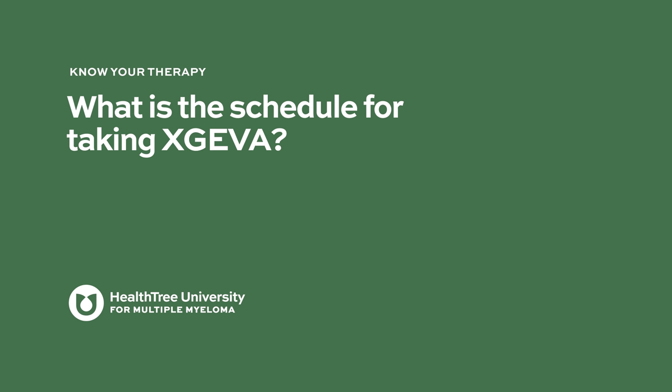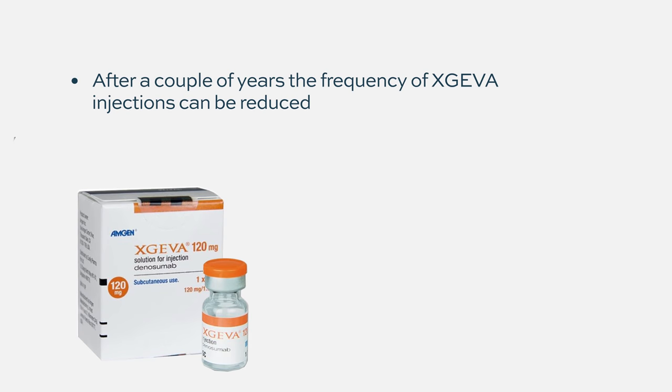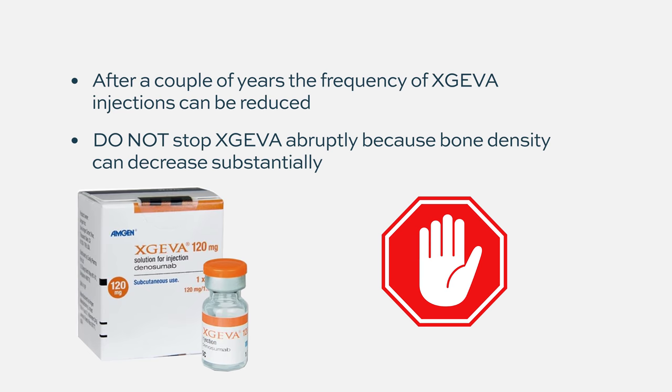What is the schedule for taking Xgeva? For Denosumab, the schedule is usually one injection once a month, and people usually receive that for about a couple of years. It's very important not to discontinue it abruptly after that — you should give at least one injection every six months or once a year, because we've observed that in patients who stop Denosumab abruptly, the density of the bone decreases substantially. You have to stay on it for a long time to avoid that bone density loss.